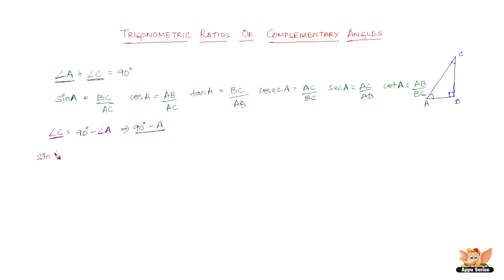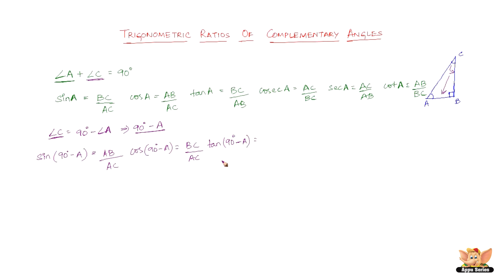Let's see what sine of (90 degrees minus A) is. That is sine of angle C, which equals opposite by hypotenuse. The opposite to angle C is AB, so it's AB over AC. Cos of (90 degrees minus A), which is cos of angle C, equals adjacent by hypotenuse, so BC over AC. Tan of (90 degrees minus A) is angle C, so opposite by adjacent, which is AB over BC.